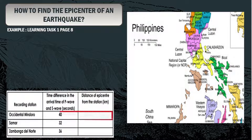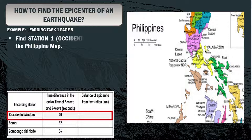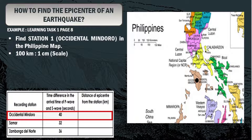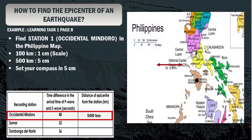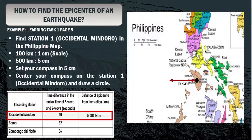After computing the distance, we plot it on the Philippine map. Find Station 1, Occidental Mindoro, on the map. Using a scale of 100 kilometers to 1 centimeter, a distance of 500 kilometers equals 5 centimeters. Set your compass to 5 centimeters, center it on Station 1 — Occidental Mindoro — and draw a circle.